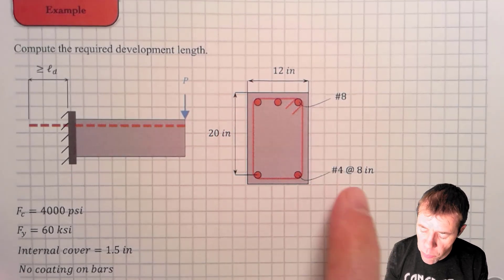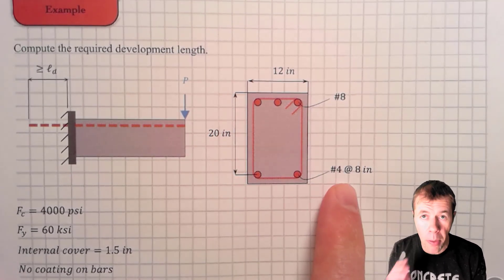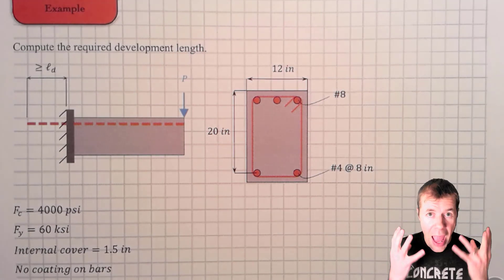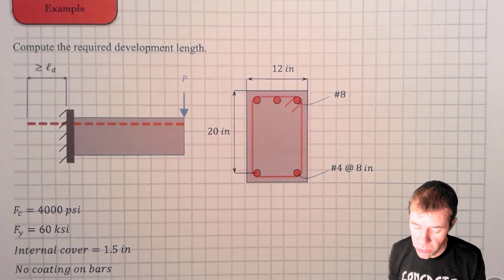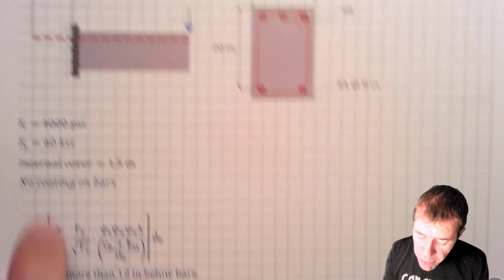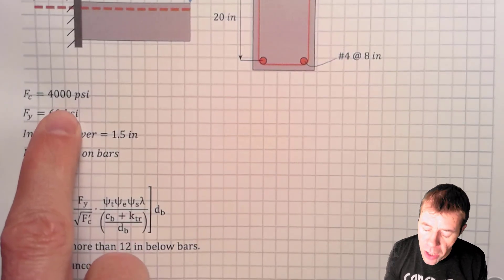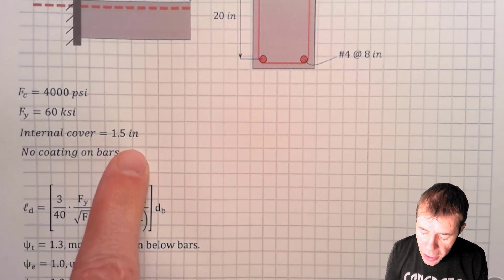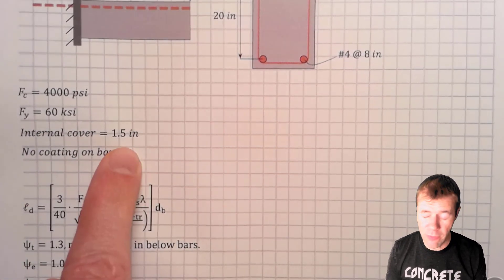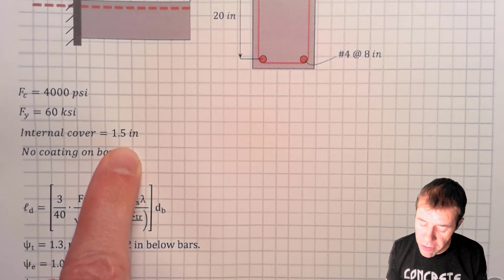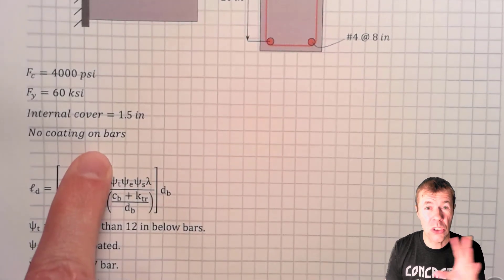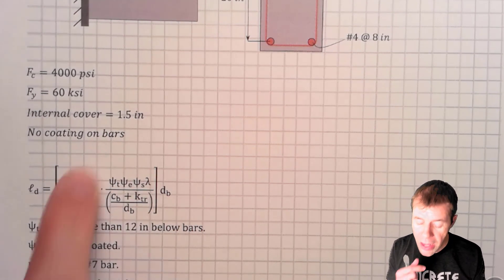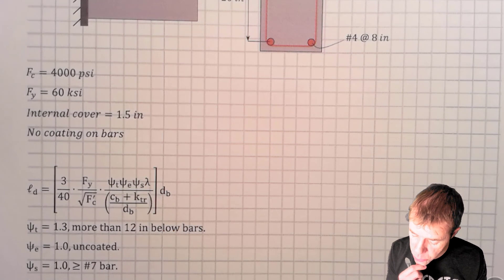Number 8 bar at the top, and we're using number 4s at 8 inches. I apologize if you are an SI person — I'm teaching my class and they are Imperial folks, so we're going to move on with Imperial. We're using an F'C of 4,000 PSI and an FY of 60 KSI. My internal cover is 1½ inches — that means I'm inside a building using a cover of 1½ inches. There are no coatings on the bar; these are black steel, and that is going to impact the factors we end up using.